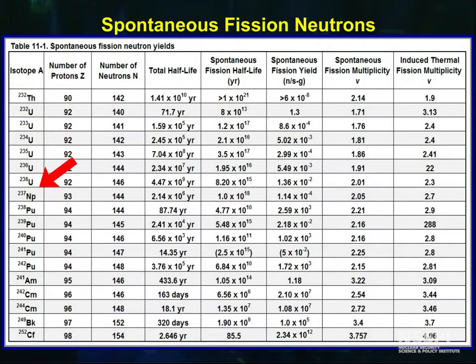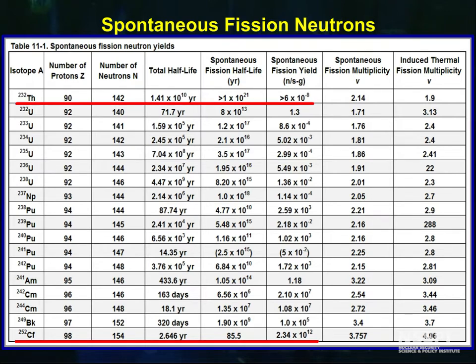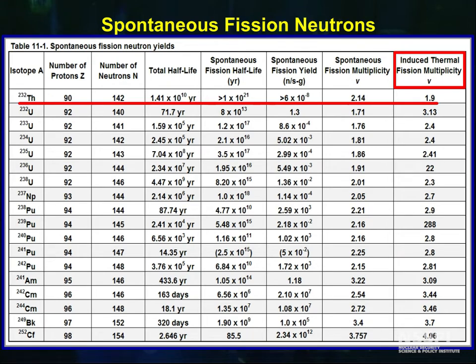All of the higher actinides are subject to spontaneous fission to a greater or lesser degree, and they emit fission neutrons when they do. Notice the huge range of activities that are possible, from 2.34 times 10 to the 12th neutrons per second per gram of californium-252 to 10 to the minus eighth neutrons per second per gram of thorium-232. Also notice that the neutron multiplicity varies between 1.9 for thorium to 4.6 for californium.